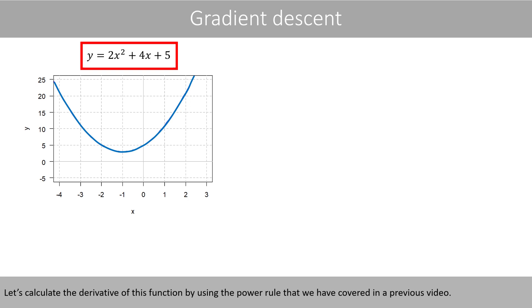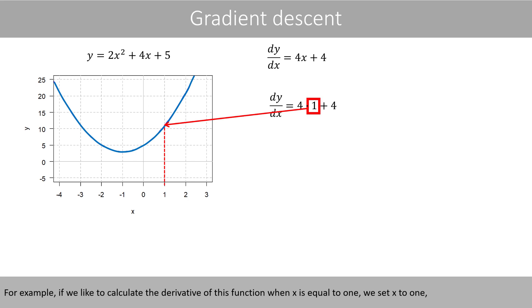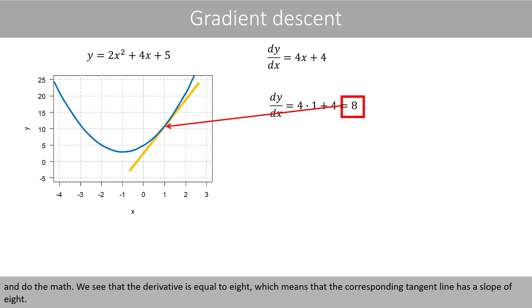Let's calculate the derivative of this function by using the power rule that we have covered in the previous video. This is the derivative of the function. For example, if we like to calculate the derivative of this function when x is equal to 1, we set x to 1 and do the math. We see that the derivative is equal to 8, which means that the corresponding tangent line has a slope of 8.